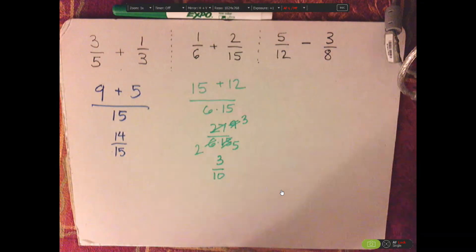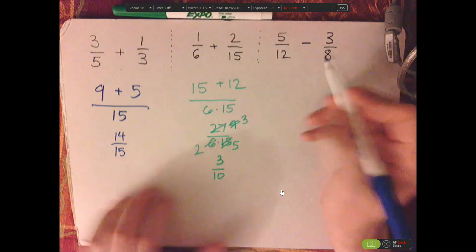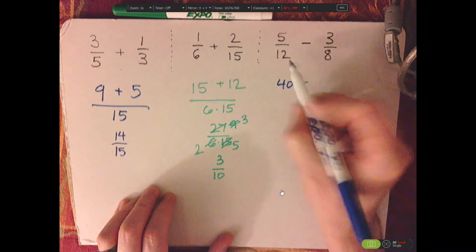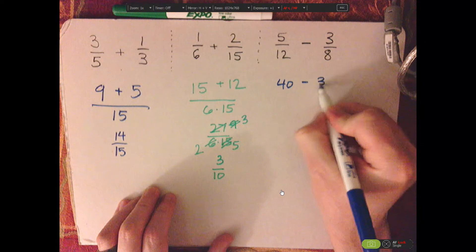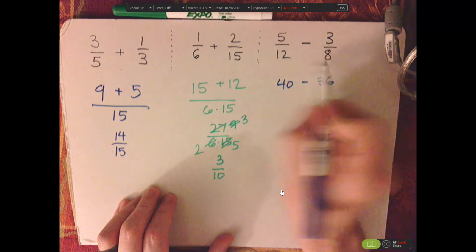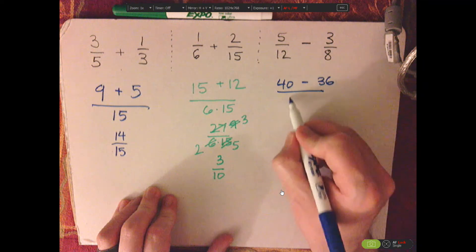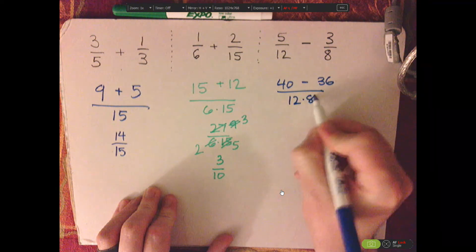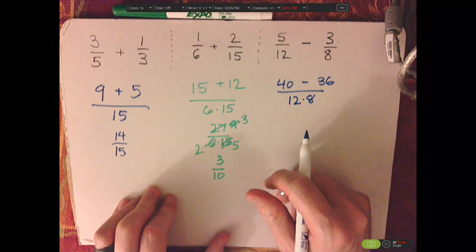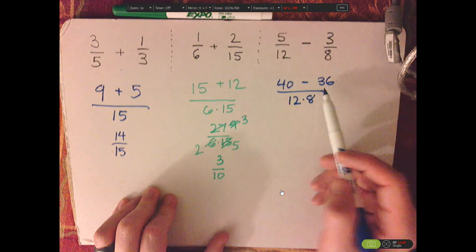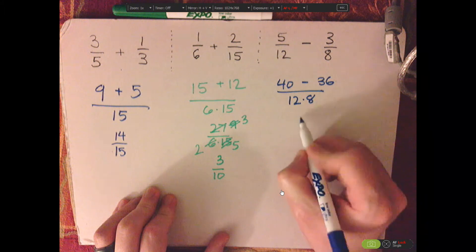Subtraction, you do the same thing. 8 times 5 is 40. 12 times 3 is 36. With the denominator, I'm just going to leave that as 12 times 8. We might be able to cancel things out. Subtract these. 40 minus 36 is 4.